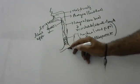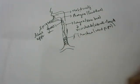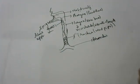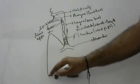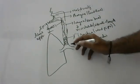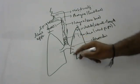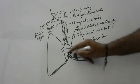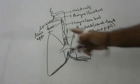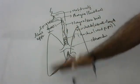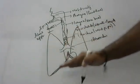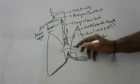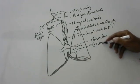The trachea divides into two bronchi. Each bronchus enters one lung. Both the lungs are resting on the diaphragm. Diaphragm is a muscular organ which separates the abdomen and chest. In the chest you have the lungs and heart; in the abdomen you have the stomach and intestines. Each bronchus after entering a lung divides into several bronchioles.